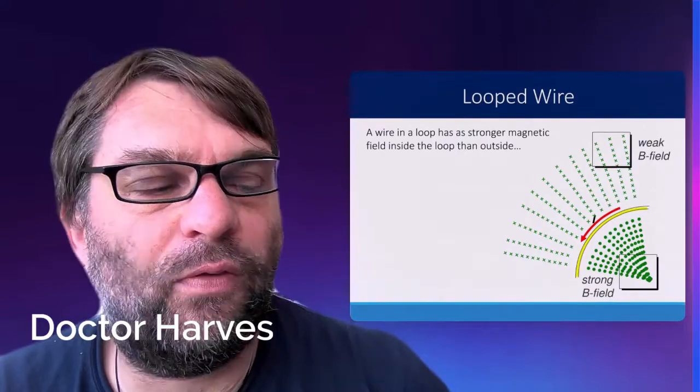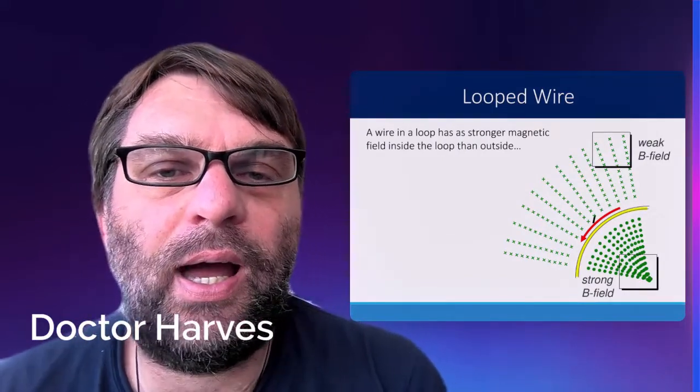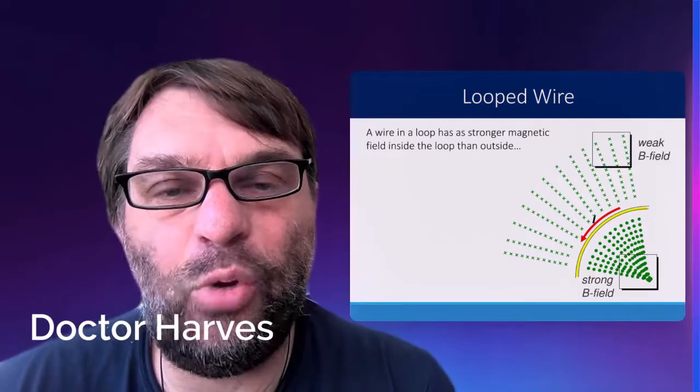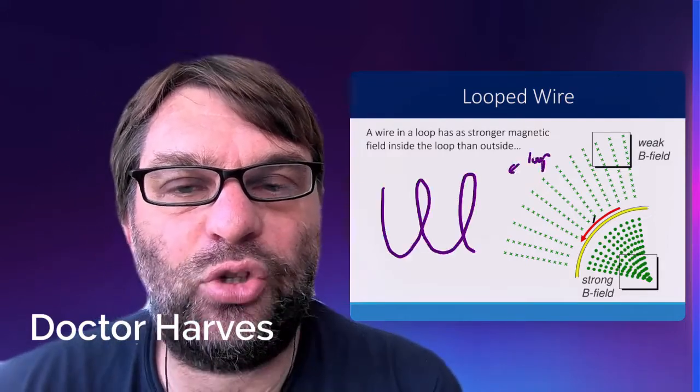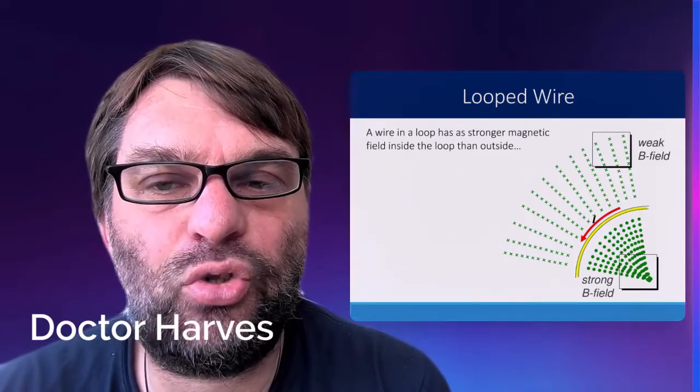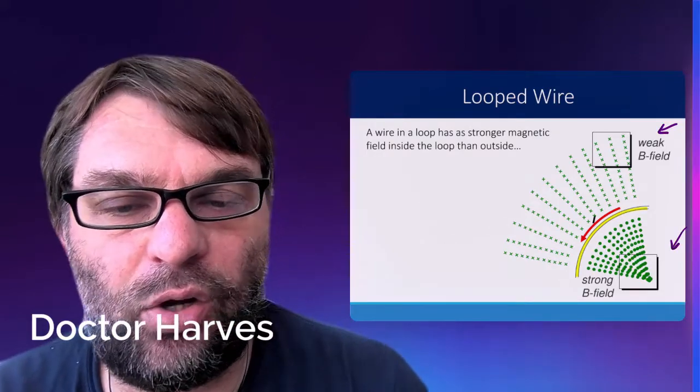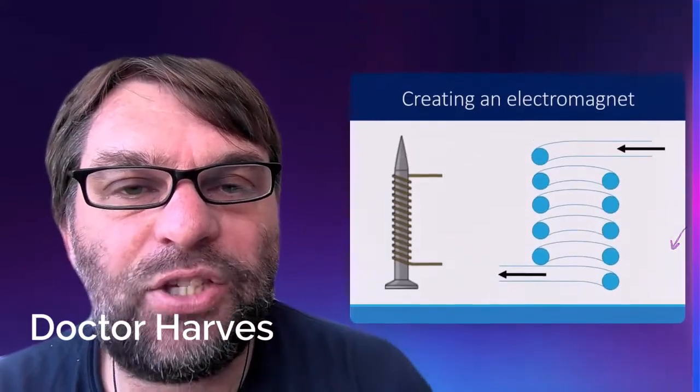In terms of a looped wire, the wire in the loop actually has a much stronger magnetic field inside the loop than it does on the outside. You can see that from the diagram because the magnetic field lines are further apart on the outside of the wire and closer together on the inside of the wire.